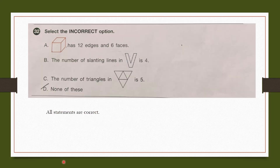Question number 32: Select the incorrect option. Option A — a cube has 12 edges and 6 faces: correct. Option B — the number of slanting lines in V is 4: yes, correct. Option C — the number of triangles in this figure is 5: 1, 2, 3, 4 and 5, correct. All statements are correct. So our answer is D, none of these.